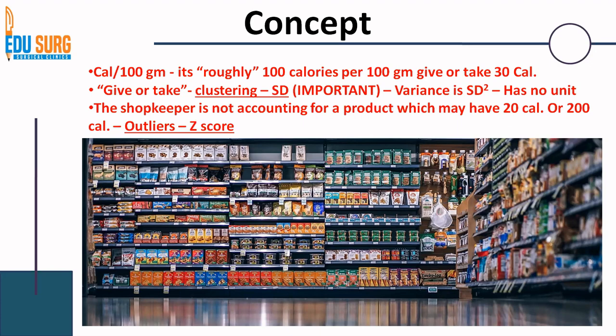The shopkeeper is not accounting for a product that may have 20 calories or 200 calories per 100 gram — those would be outliers. If you look at all 150 plus products, the clustering is between 70 and 130. Most of the data is in that range, and the shopkeeper is not accounting for the one or two outliers at the extremes — 20 calories or 200 calories per 100 gram. These extreme values are identified by Z-score. I hope this gives a simple explanation of what standard deviation, variance, and Z-score mean.